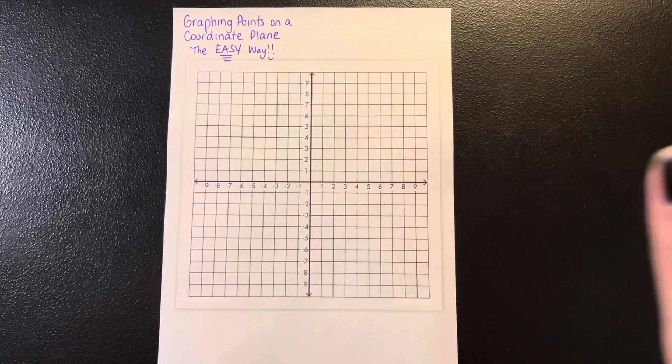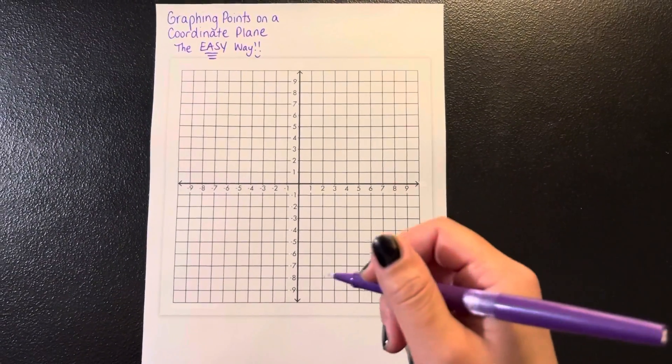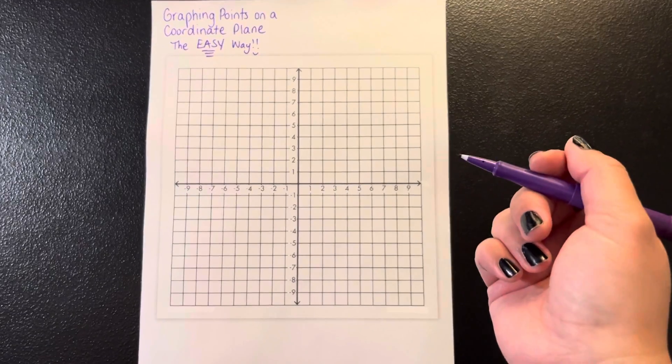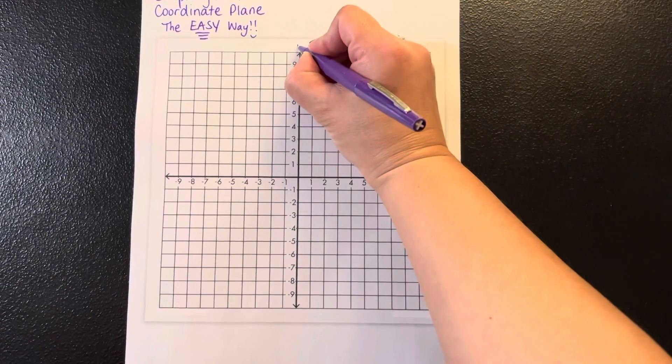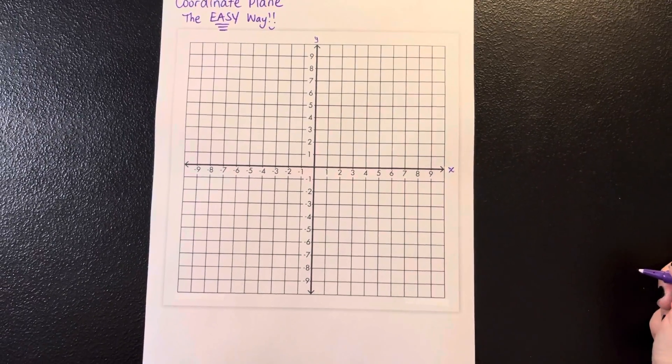So to start off, here is my coordinate grid, right? You have your four quadrants, you have your axes, and the axes are already numbered. The y-axis goes up and down, the x-axis goes left to right.